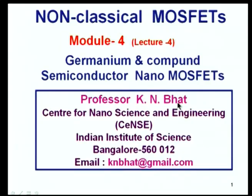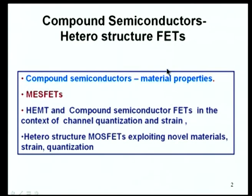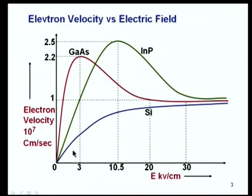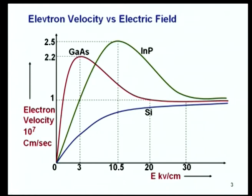We continue our discussion on compound semiconductors, moving on to FETs and heterostructure FETs. We have shown that gallium arsenide and indium phosphide have electron velocity versus electric field characteristics totally different from silicon. This is because of the transport mechanism: electrons tend to be in the high electron mobility region, that is the low effective mass region, at slightly lower energy, and get transferred to the higher mass region where mobility falls.